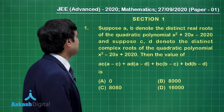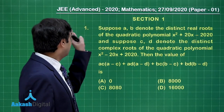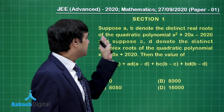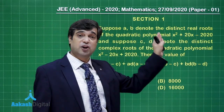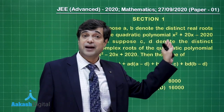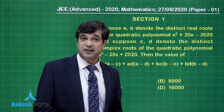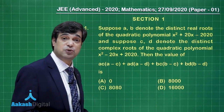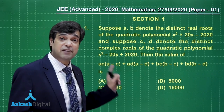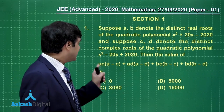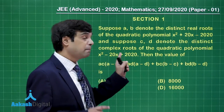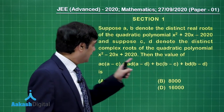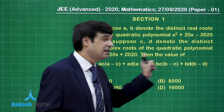Question 1: Suppose a and b denote the distinct real roots of the quadratic polynomial x² + 20x − 2020, while c and d are the complex roots of another polynomial x² − 20x + 2020. There is a lot of use of 2020. We need to find the value of an expression involving a, b, c, d — the roots.